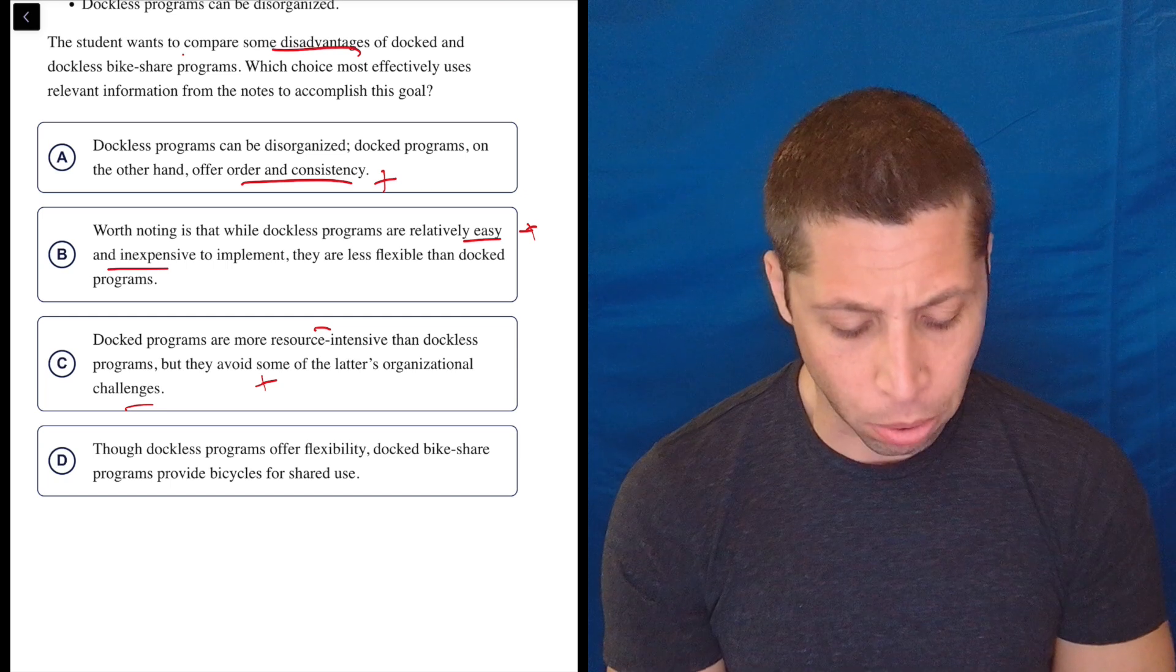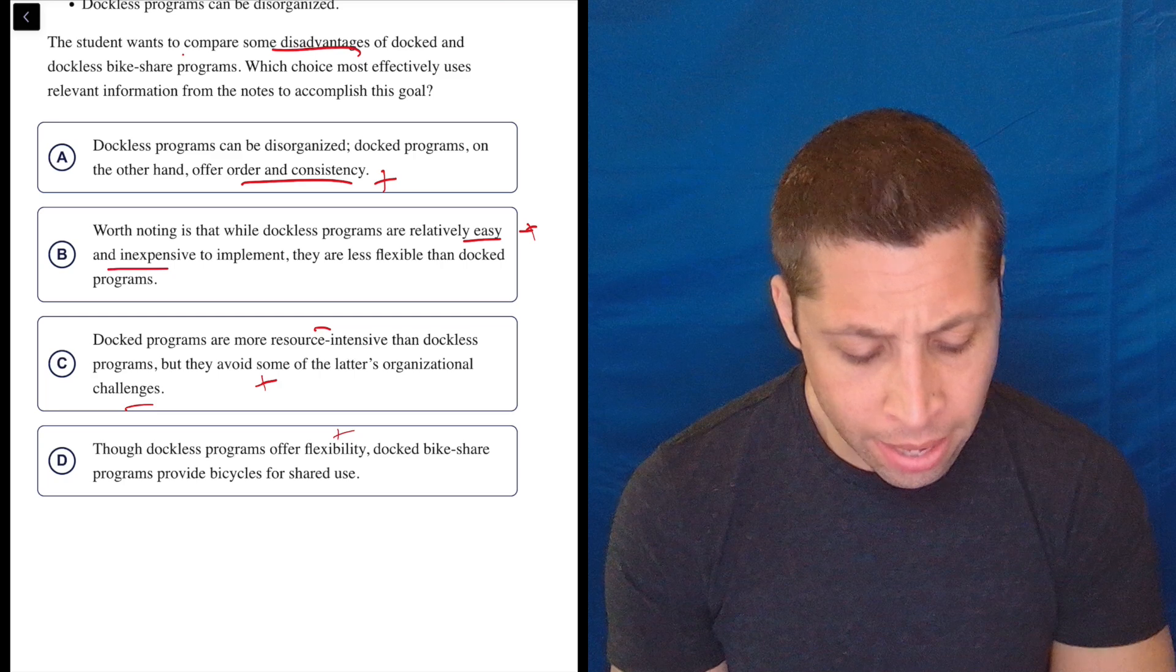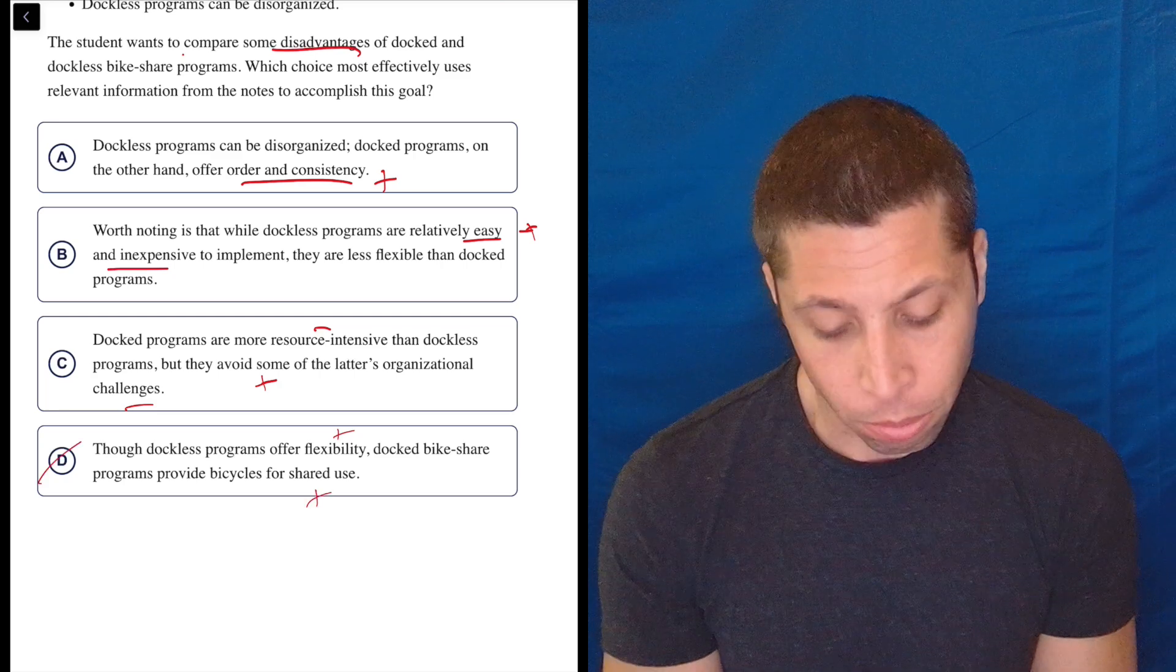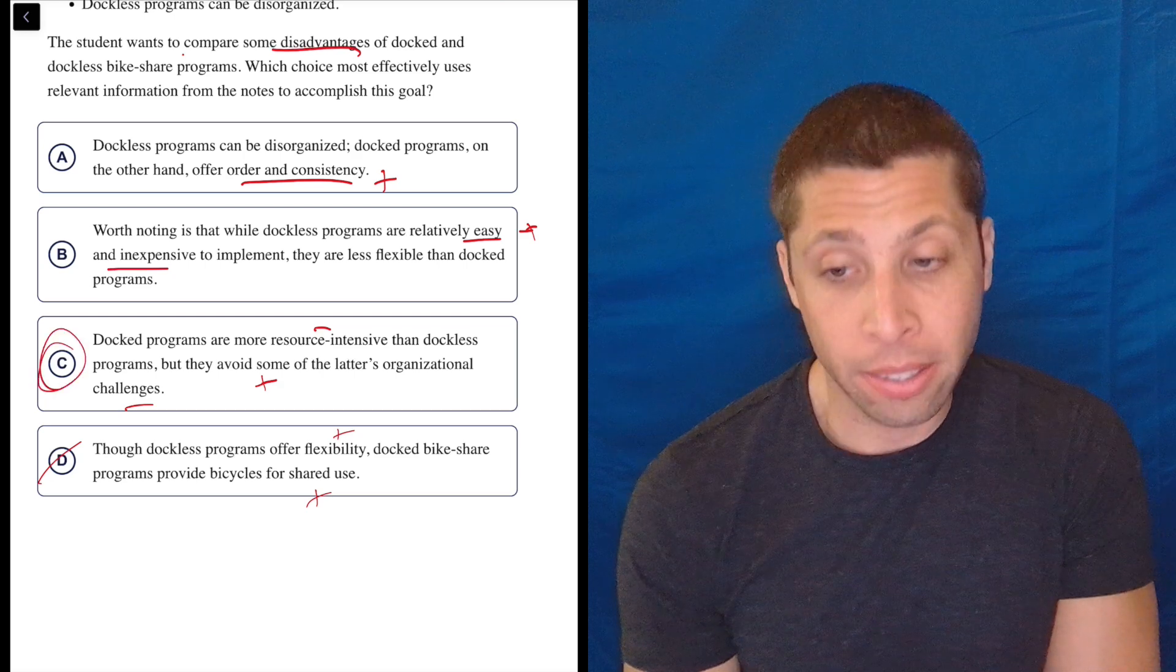D, though dockless programs offer flexibility. Positive. Docked bike share programs provide bicycles for shared use. This is both positive. So no. I wouldn't really think much of it here. It's C.